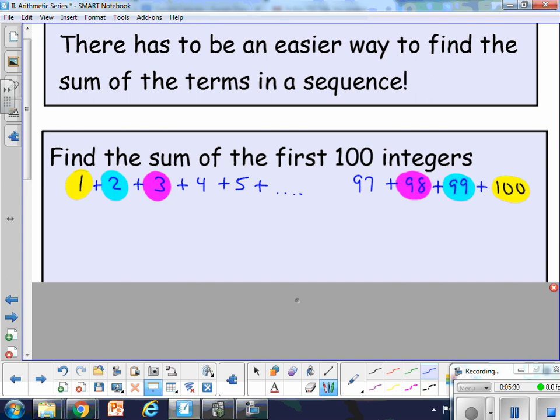So Gauss realized, if you have 100 terms and you're pairing them up, there should be 50 pairs. So he's basically saying that the sum, there are 50 pairs, and each pair is 101.